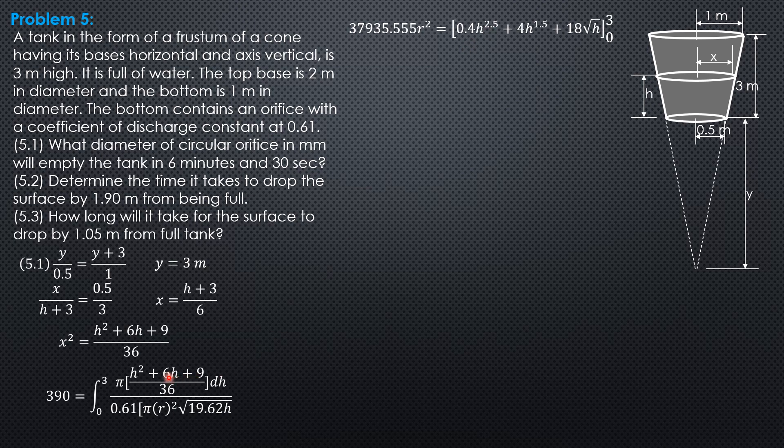Second term is 6H divided by square root of H is H to the 1 half. So 6 H to the 1 half. Integral of 6 H to the 1 half is 6 H to the 3 halves over 3 halves. Then 6 times reciprocal of 3 halves is 6 times 2 thirds, 4. So 4 H to the 1.5. Then 9 over square root of H or 9 H to the negative 1 half. Integral of that is 9 H to the 1 half over 1 half. So 9 over 1 half is 18. 18 H to the 1 half or 18 square root of H. Then from 0 to 3.